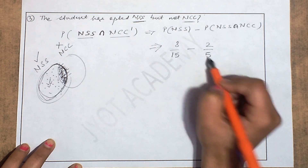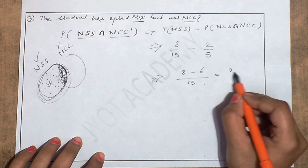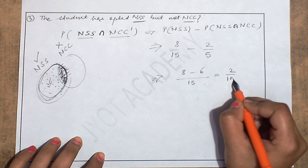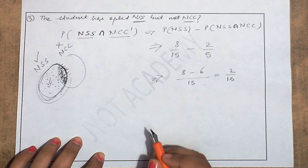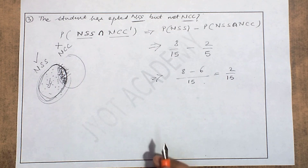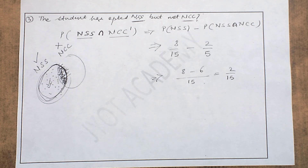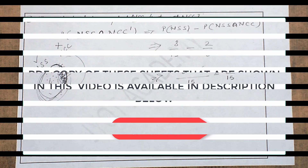P(NSS) = 8/15 and P(NCC ∩ NSS) = 2/5. So P(NSS ∩ NCC') = 8/15 − 2/5 = 2/15. That is your answer for the third part. I hope this is clear to you. Thank you students for watching this video. In the next video we will continue with solved examples for the miscellaneous exercise on this chapter.